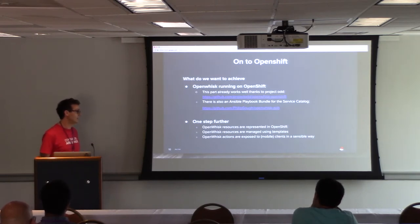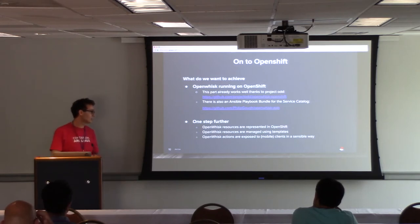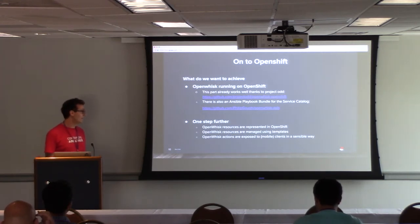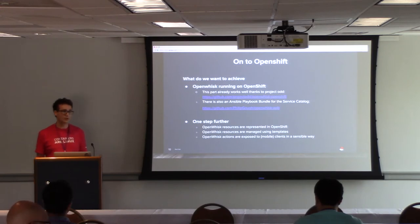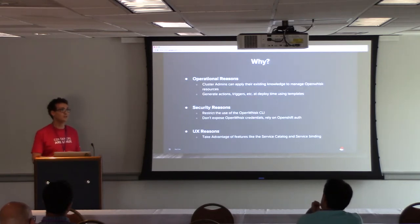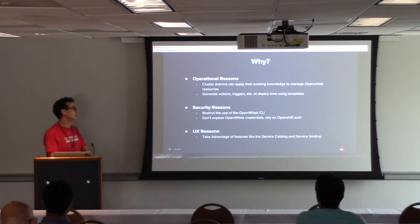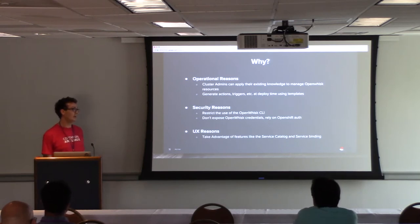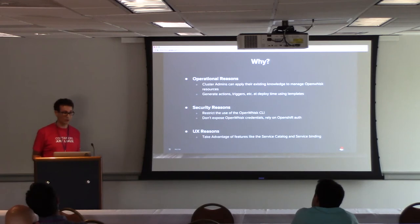We want to go one step further — we want to represent OpenWhisk resources in OpenShift. We want to represent our actions using the YAML templates that OpenShift and Kubernetes use, and give a sensible way to retrieve all necessary data — like credentials and endpoints — needed to invoke those actions. There are operational reasons: cluster admins who know OpenShift templates shouldn't need to know the OpenWhisk CLI.